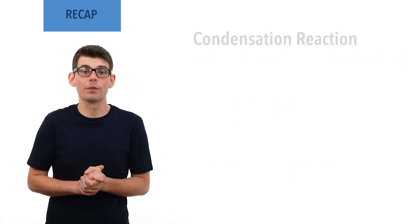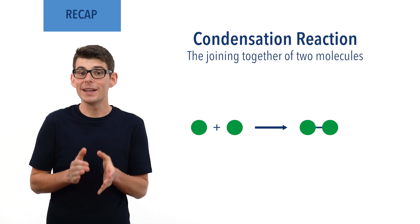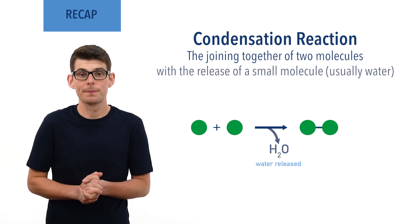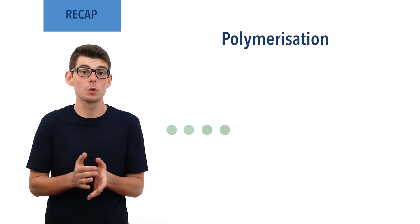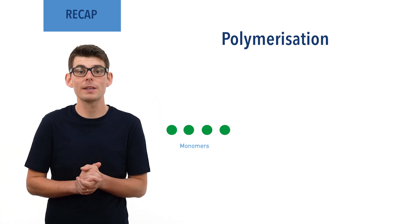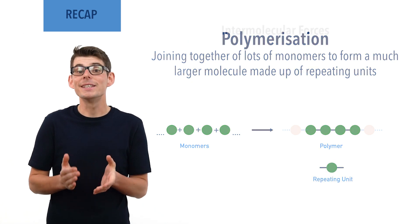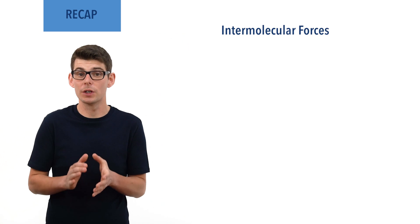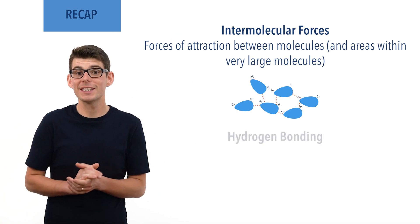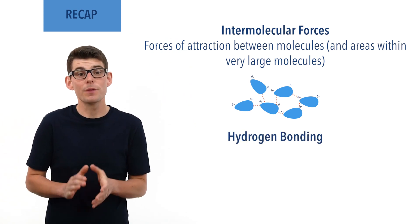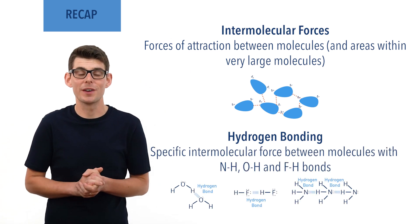A condensation reaction describes the joining of two molecules together to form a larger molecule, with the release of a small molecule, usually water. Polymerization describes the process in which lots of small molecules called monomers join together to form a long chain molecule with a repeating structure made up of repeating units. Intermolecular forces are forces of attraction that can arise between molecules or between areas within large molecules. Hydrogen bonding is a specific type of intermolecular force that can arise between and within molecules that contain OH, NH or FH covalent bonds.